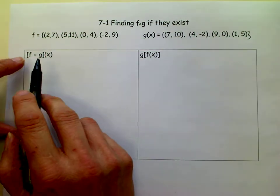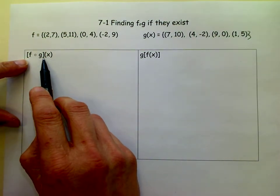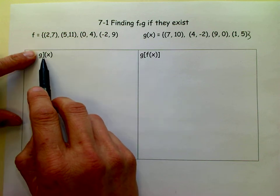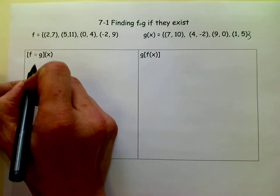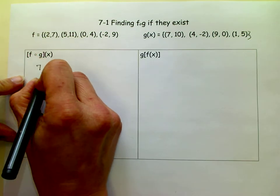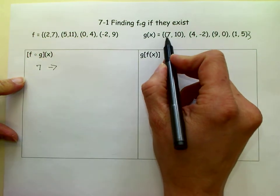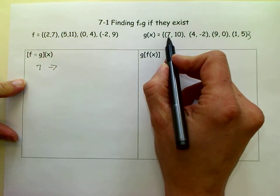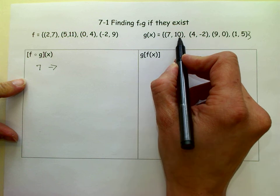So the first thing we do is, remember we work from the inside out, so we're going to go to g of x. So we go to each x in g of x, so we go to 7, and we realize that when we put a 7 as an x, we get a 10 out.